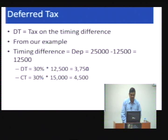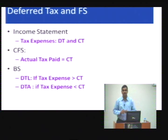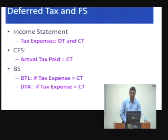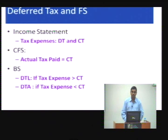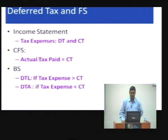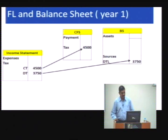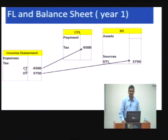In the income statement, you show tax expense as deferred tax (DT) and current tax (CT). In the cash flow statement, you show the actual tax paid — that is the current tax — as a cash outflow. In the balance sheet, you show either a deferred tax liability (DTL) or a deferred tax asset (DTA). DTL arises when tax expense is greater than tax paid; DTA arises when actual tax paid is more than the expense.